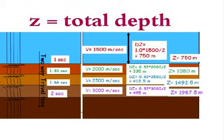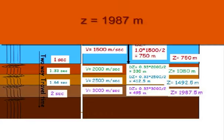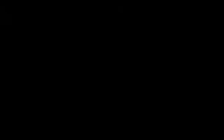Fourth zone. V equals 3,000 meters per second. DZ equals 0.33 seconds times 3,000 divided by 2 equals 495 meters. And Z equals 1,987 meters. So we get a total basement depth of 1,987 meters.